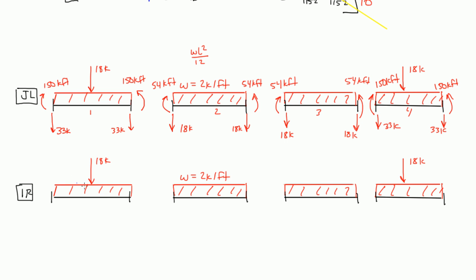That means you have a total of 66 kips going down. In order to resist that, we have 33 kips going up on both sides. And for our fixed-end moments, if you just calculate them, we have 150 kip-foot going counterclockwise, and then 150 kip-foot going clockwise — we're resisting this loading.